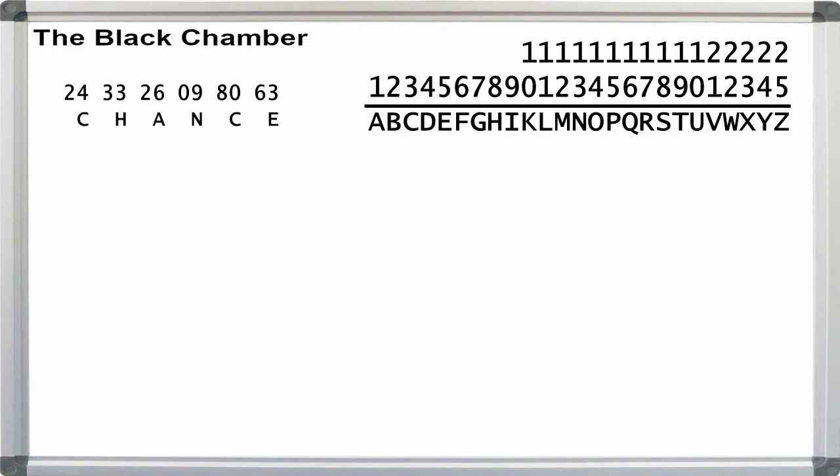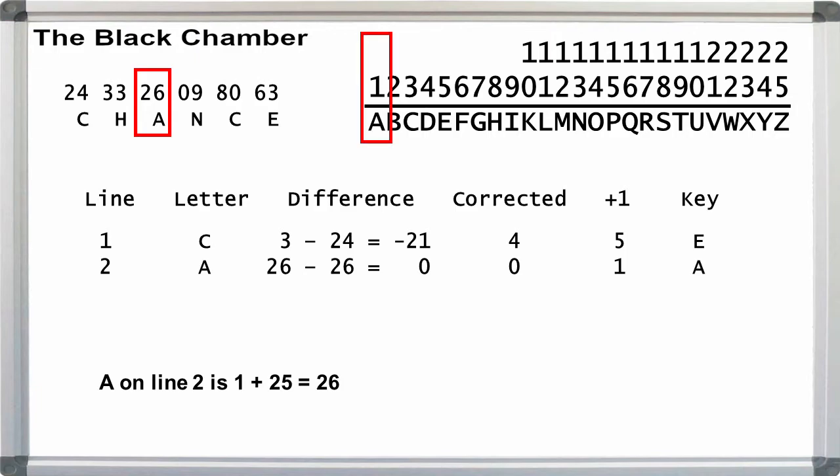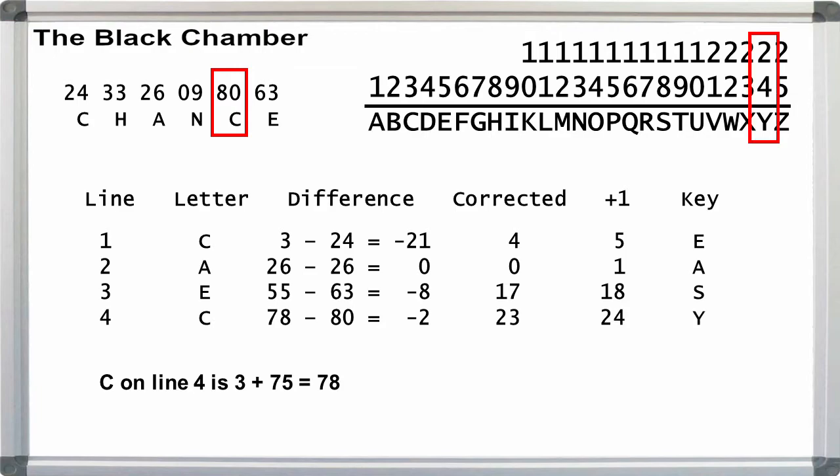Let's try assigning the hint as follows. C is 24, H is 33, A is 26, N is 09, C is 80, and E is 63. Line 1, the first C is 24, 3 minus 24 is minus 21, add 25 for a shift of 4, plus 1 for the offset gives the first key letter as letter 5 or E. Line 2, A is 26, which is the starting letter for the line, 26 through 50. So key letter 2 is A. Line 3, E is 63. 55 minus 63 is minus 8. Minus 8 plus 25 is a shift of 23. Plus 1 gives us key letter 18, S. Line 4, the second C is 80. 78 minus 80 is minus 2. Minus 2 plus 25 is a shift of 23. Plus 1 is the key letter 24, the letter Y. The keyword is easy.